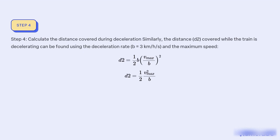Step 4: Calculate the distance covered during deceleration. Similarly, the distance d2 covered while the train is decelerating can be found using the deceleration rate b = 3 km/h/s and the maximum speed: d2 = ½ (v_max / b)², which simplifies to d2 = v_max² / (2b).